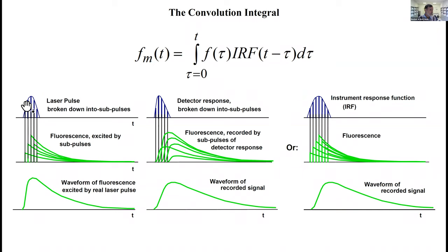Let's assume we have a laser pulse. The laser pulse excites fluorescence, and we can assume the laser pulse is broken down in a large number of small pulses of very small bits. All these pulses will excite a fluorescence decay, and the real fluorescence decay will be the sum of all these fluorescence decays excited by the individual pulses. This is the real waveform of the fluorescence excited by a laser pulse.